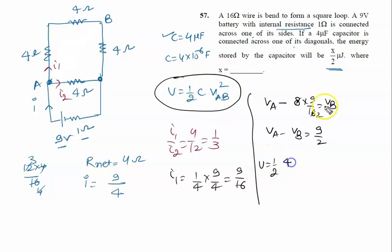C is only 4 microfarad because answer is called microjoule into V square that is 9 by 2 into 9 by 2. So 2 to the 4 and U is given by 81 by 2 microjoule. X is given by 81.